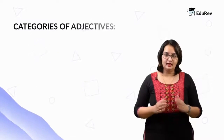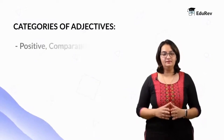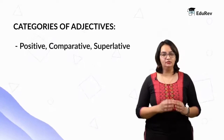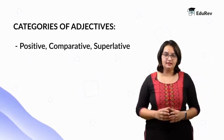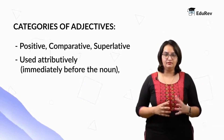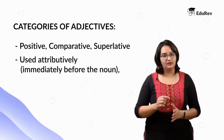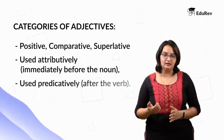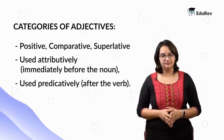Adjectives can be categorized in three categories: positive, comparative, and superlative. For example, good, better, best. Adjectives can be used in the attributive manner, where they come just before the noun. And they can also be used in a predicative manner, where they come just after the verb.